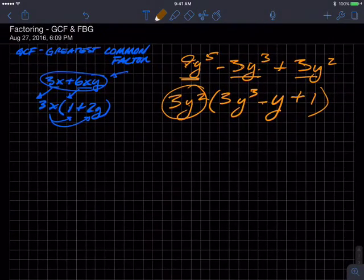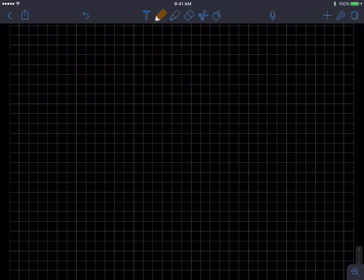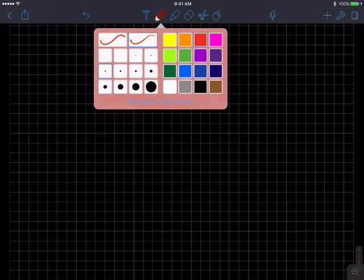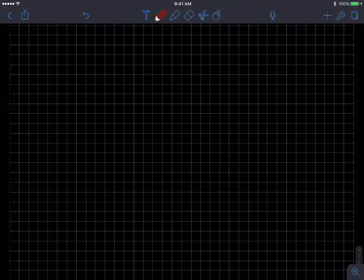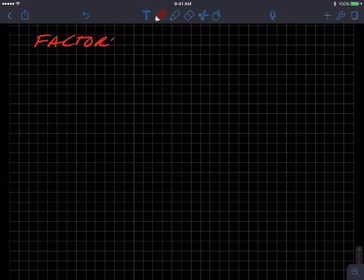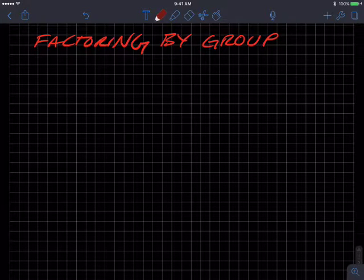So let's go back down to regular size. Now factoring by grouping is simply straight-up language. Factoring by grouping. We're going to group terms and factor them separately from the other terms and leave them hanging, so to speak. So this one has all letters, so hopefully it doesn't freak you out.